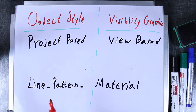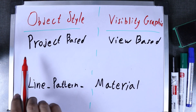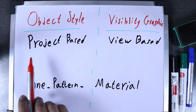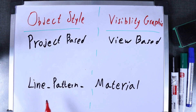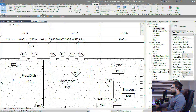The first tool we want to learn is Object Style. Object Style is project-based — when you change something in it, it will affect all of the project in all of the views. In Object Style you can change the line and pattern of each category's elements in the projection and cut views, and you can also change the default material of each category.